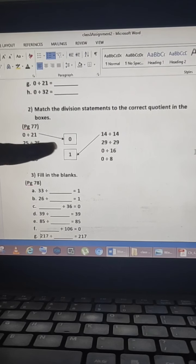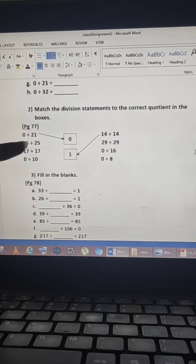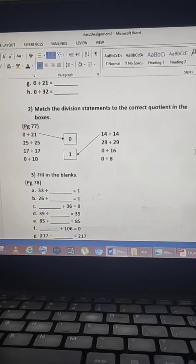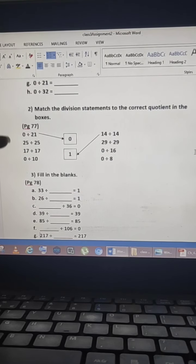So, 0 divided by 21 matched with 0. Because when we divide 0 by a number, we only get 0. Similarly, 25 divided by 25. Because when we divide the number from that number, we always get 1. So, it means, it should be matched with 1 only. So, similarly, you can match all other numbers.